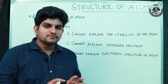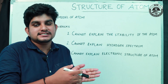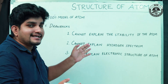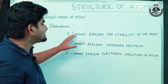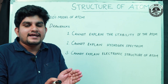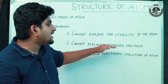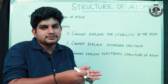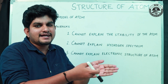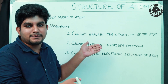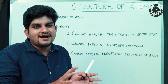Now let's learn a few drawbacks of Rutherford's Planetary Model. The drawbacks are: it cannot explain the stability of an atom — an atom is stable, but Rutherford's model cannot explain this.